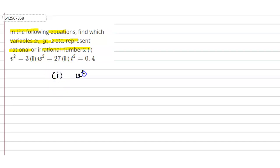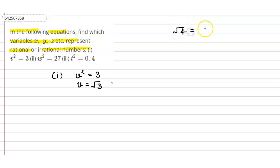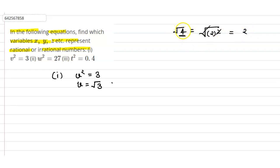In the first part, we have v² = 3. Taking the square root, v = √3. If any value is given under a square root and it is not a perfect square, then that number will be irrational. For example, √4 = 2, which is rational because 4 is a perfect square. Since √3 is not a perfect square, v = √3 is an irrational number.